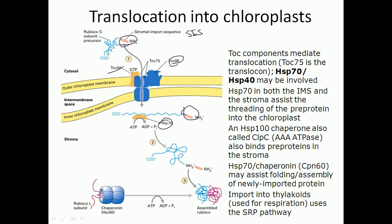During this process, the small subunit will be attached with the rubisco large subunit, which is also being guided by another chaperonin called HSC60 to be folded properly.